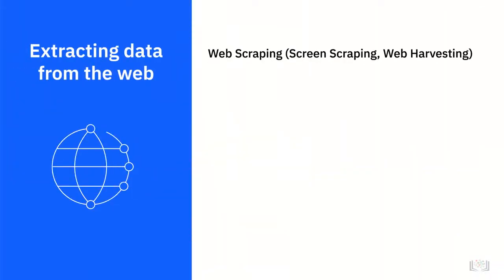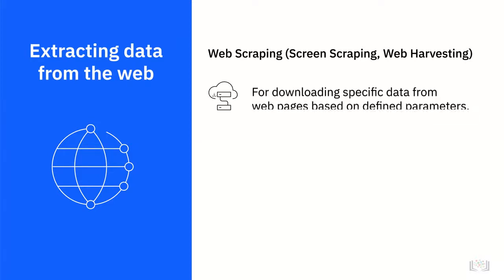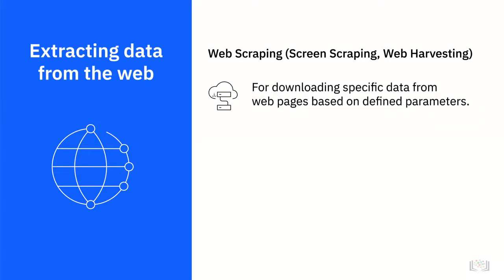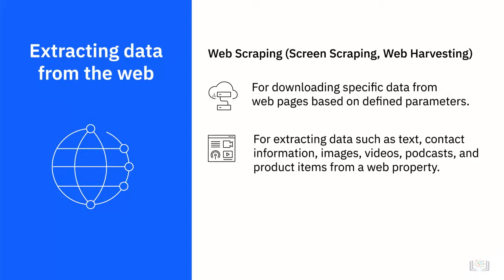Web scraping, also known as screen scraping or web harvesting, is used for downloading specific data from web pages based on defined parameters. Among other things, web scraping is used to extract data such as text, contact information, images, videos, podcasts, and product items from a web property.